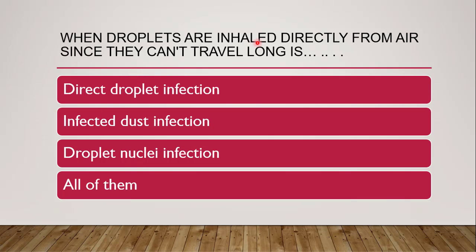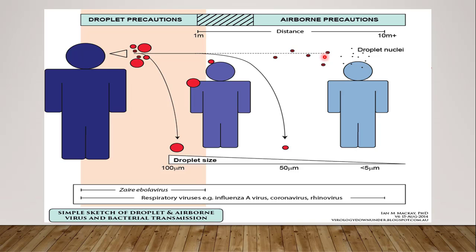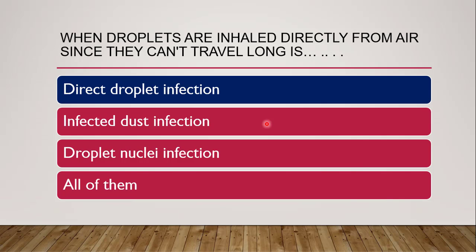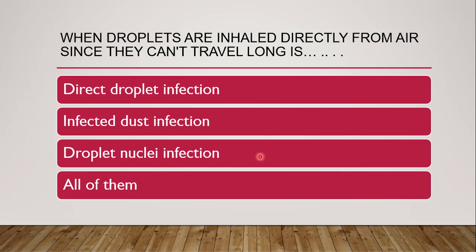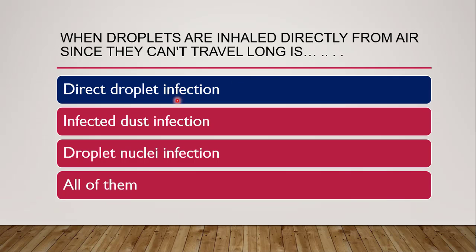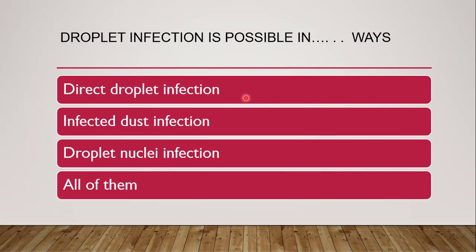Next question: when the droplets are inhaled directly from the air since they cannot travel long distances, and are inhaled by another person directly, the state is — direct droplet infection, infected dust infection, droplet nuclei infection, or all of them? Droplet nuclei is not correct here because that refers to the suspended state. Infected dust is not correct because that involves falling on an article. Since the droplets travel directly from air to another person and cannot travel long distances, the correct answer is direct droplet infection.